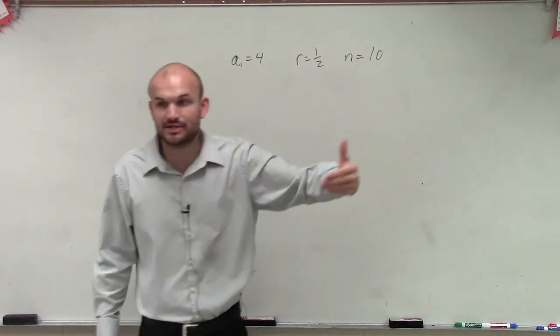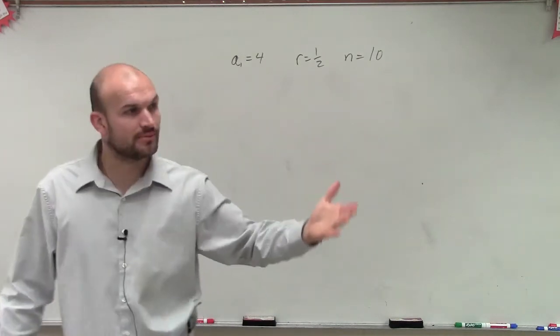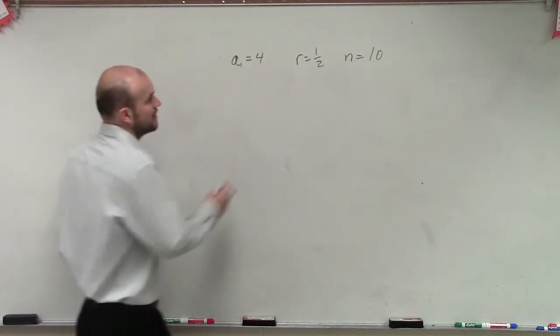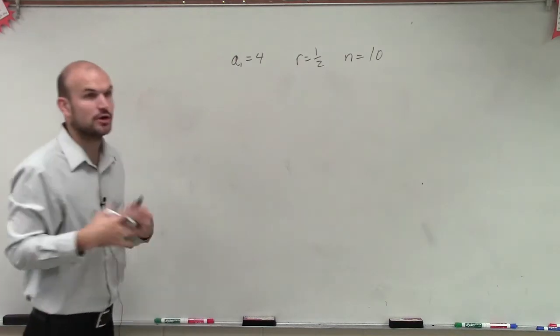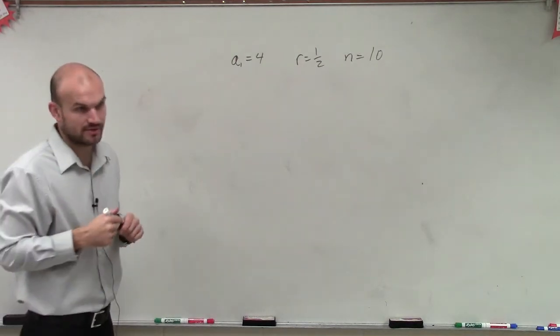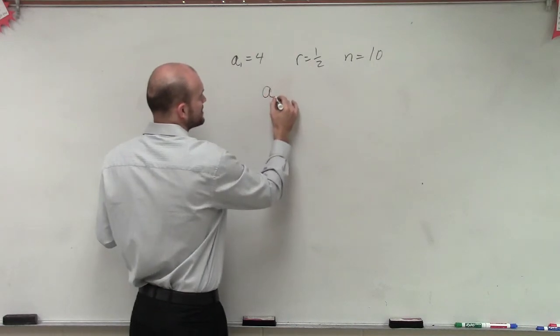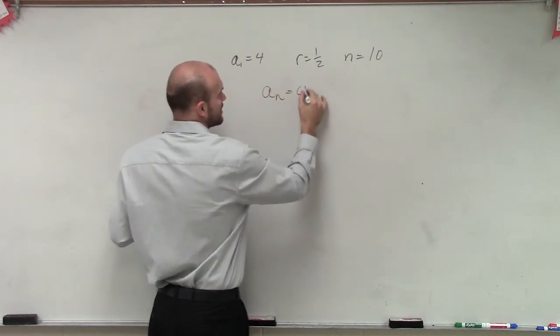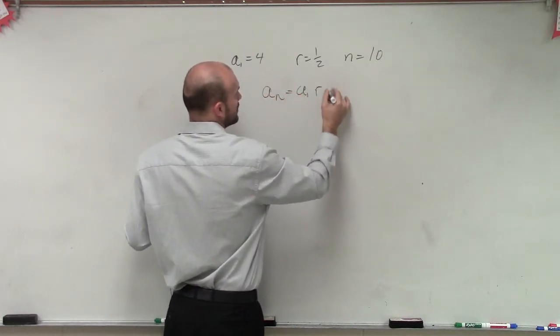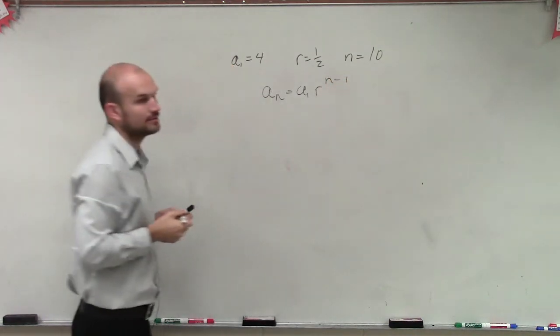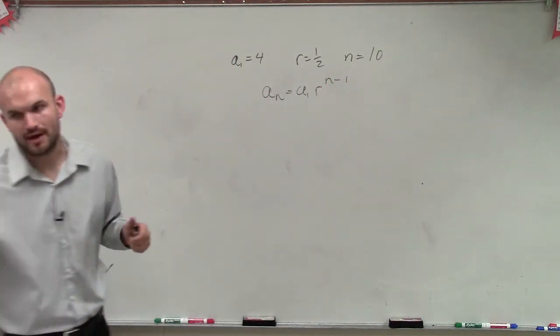Well, before we do that, we need to make sure that we figure out what the formula is going to be. So remember, we have a ratio, so we know that this is going to be a geometric sequence, right? So the formula for geometric sequence is a sub n equals a sub 1 times r raised to the n minus 1 power. So we got to know that.